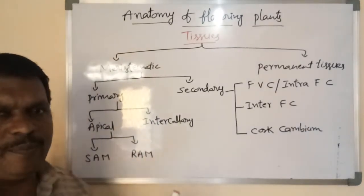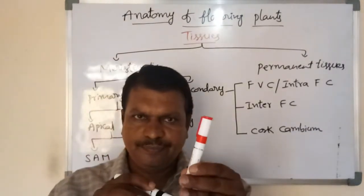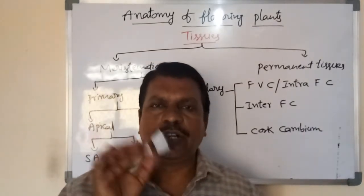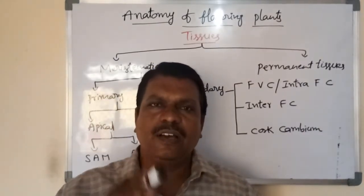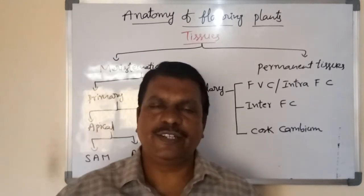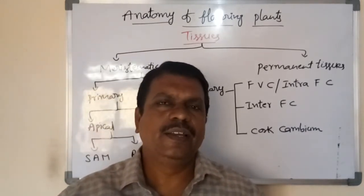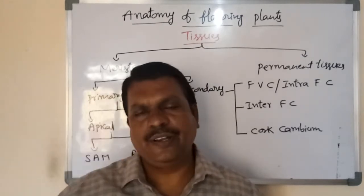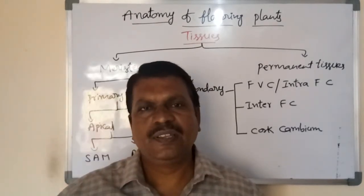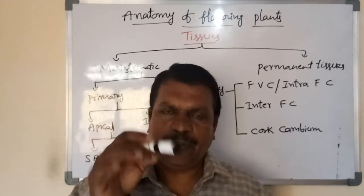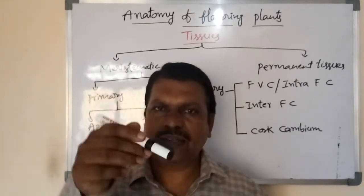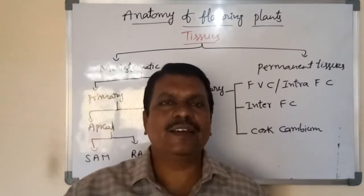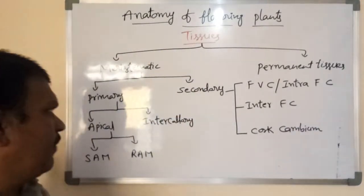Root apical meristem — the tip of the root. In the NCERT book, LS of shoot tip and LS of root tip are clearly mentioned. Observe these two diagrams — don't forget. Whatever diagrams are given in NCERT are very important. Once you go through LS of shoot tip and LS of root tip, observe the shape of the diagram and what parts are shown.